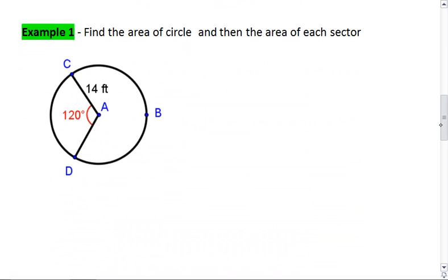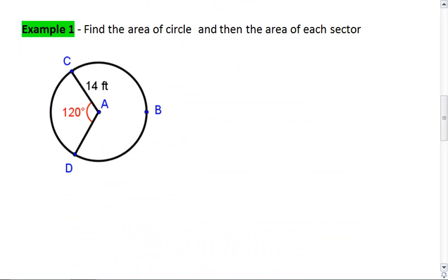Well, let's look at some examples. Find the area of a circle and then the area of each sector. So you're given here a radius of 14 feet and an angle of 120 degrees. Try this on your own real quick first and then resume when you're ready to check your solution.